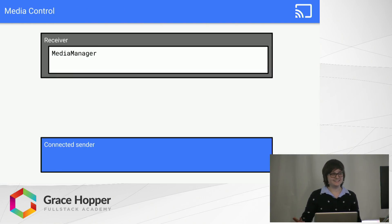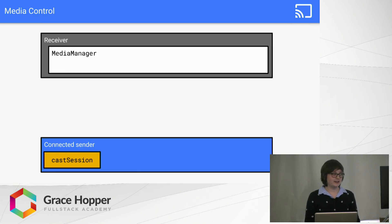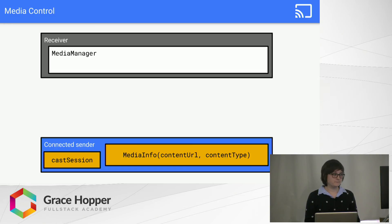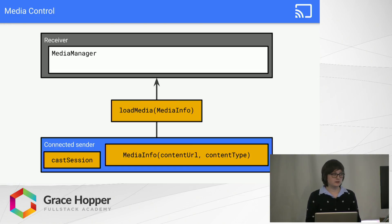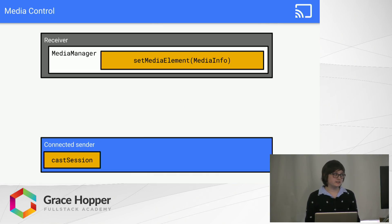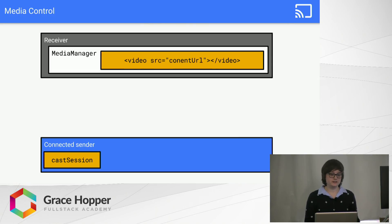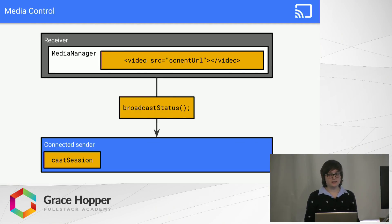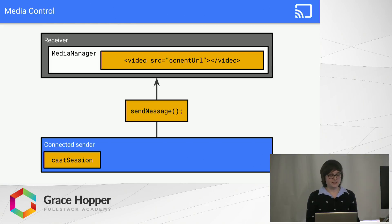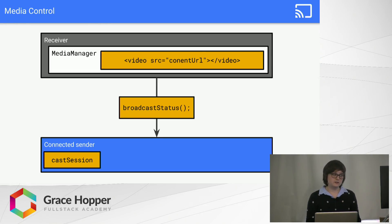That was a lot of code, so here's a visualization of it, because that helps when a lot of things are moving around. We have the cast session on our connected sender, and then we create our media info object. We send the media info to the receiver device with the load media function. The receiver's media manager takes that media info and sets it as the media element, which basically sets the source URL for the video player. The Chromecast then broadcasts the status back to your connected sender saying it's loaded and you can hit play. You send a message back to the Chromecast, and every time the status is updated on the Chromecast it'll rebroadcast it, so your phone and the Chromecast are always in sync.